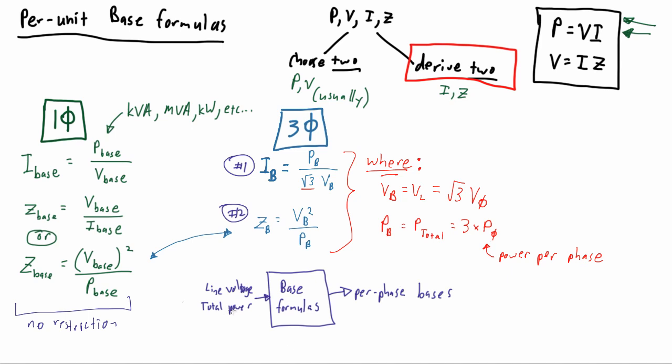It's pretty incredible that we have formulas where you input a line and total value and get out a per-phase value. You should ask yourself: why is that happening? What about the per unit method is being accomplished here? Why do we need to move from line and total to per-phase values? Well, in balanced three-phase circuit analysis, what we actually do is treat it like three individual single-phase circuits.